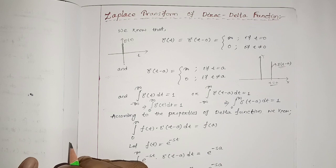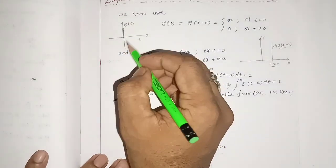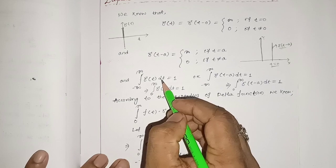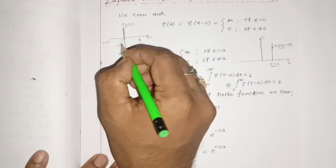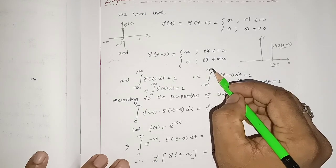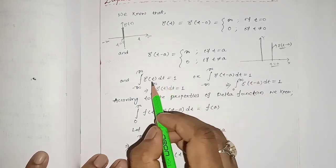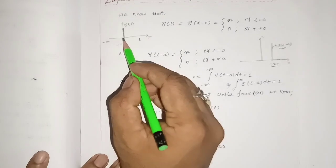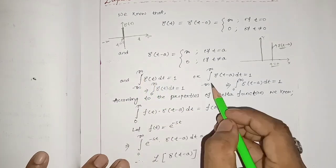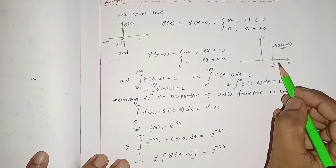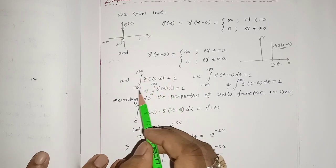This is one important property of the delta function. If we integrate δ(t) dt from minus infinity to plus infinity, we get 1 — meaning it exists at t equal to 0. Likewise, integrating δ(t - a) from minus infinity to plus infinity also gives the value 1, meaning the function exists at t equal to a, which lies between minus infinity and plus infinity.